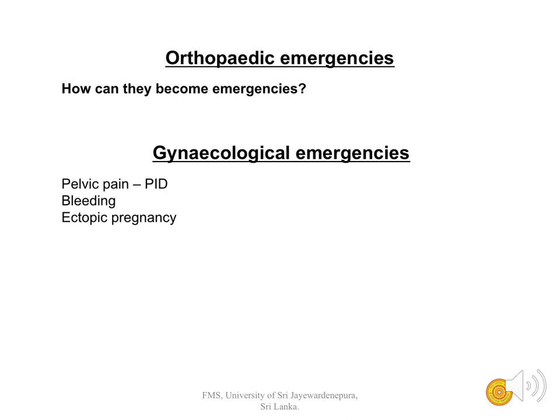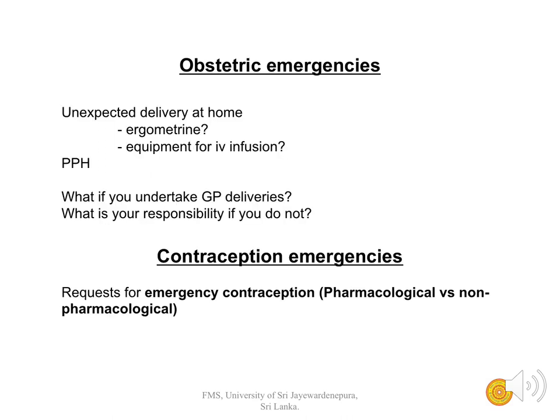Orthopedic emergencies include fractured neck of the femur. The fixation may not be an emergency, but if there is hemorrhage or a forming hematoma, or if it is a fracture of the humerus with associated neurovascular damage leading to hemorrhage, it could be life-threatening. Gynecological emergencies include pelvic inflammatory disease, bleeding ectopic pregnancy, and obstetric emergencies like postpartum hemorrhage.